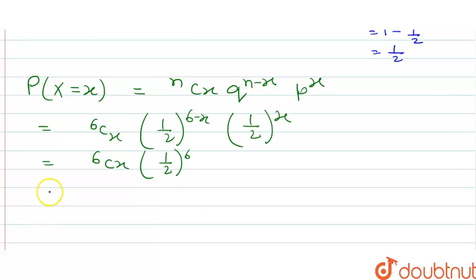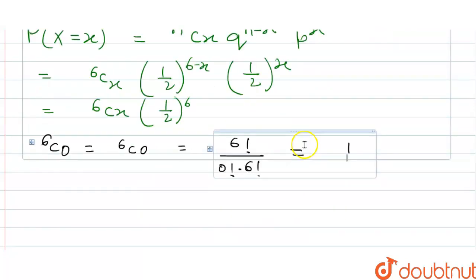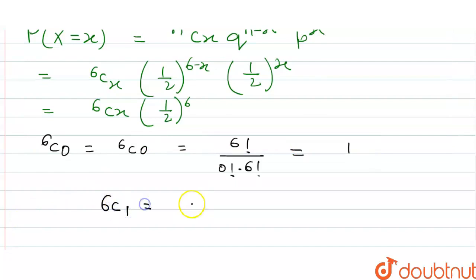Then 6C0, that is 6C0 equals 6 factorial upon 0 factorial times 0 factorial equals 1. Similarly, we have to check 6C1 equals 6C5 equals 6 factorial upon 1 factorial times 5 factorial. The value will be 6.